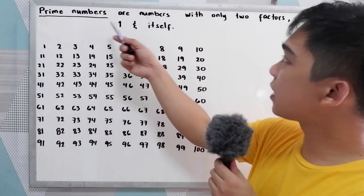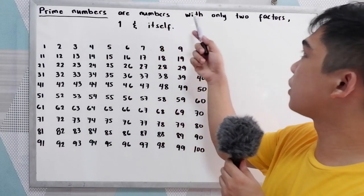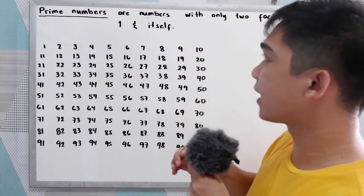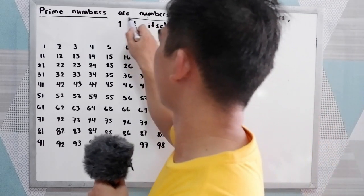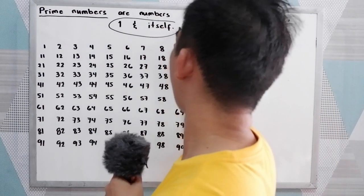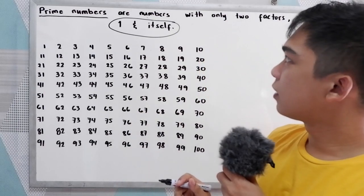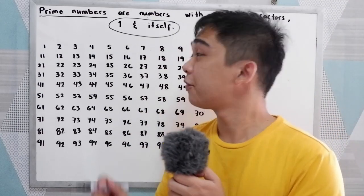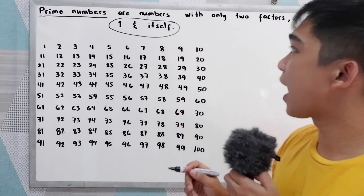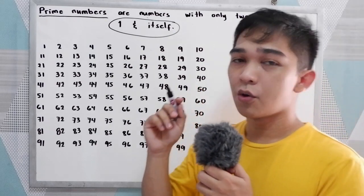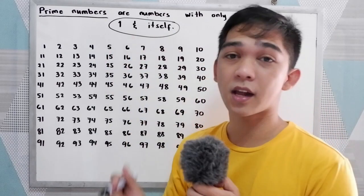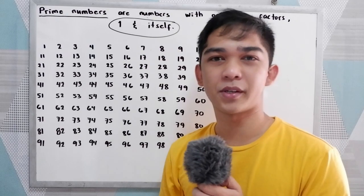When we say prime numbers, these are the numbers with only two factors: one and itself. Otherwise, if the number has more than two factors aside from one and itself, it is a composite number.